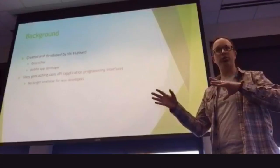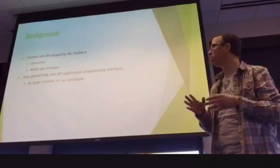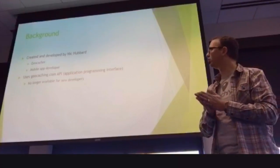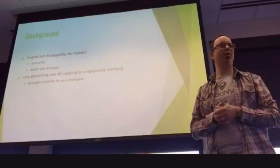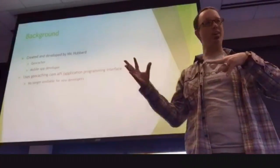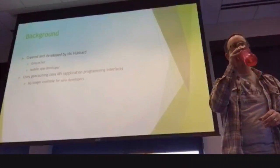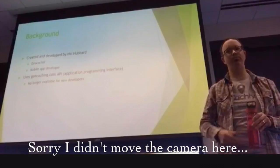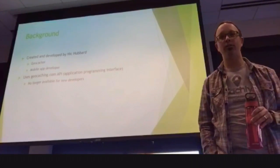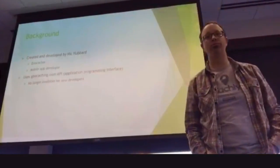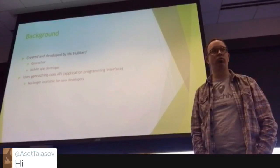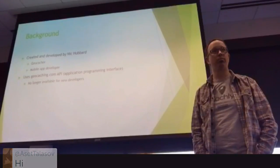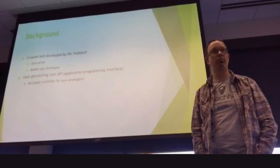One of the things we're going to talk about, especially as it relates to the difference between Cachely and cgeo, is it uses the geocaching.com API. So what is an API? All geocaching apps use APIs, but geocaching.com has one called Geocaching Live that's been around for a few years. It's their way of allowing third-party developers like Cachely to hook into their website but with some controls. Basically, an API is a way for an application to talk to the back end of the geocaching service.